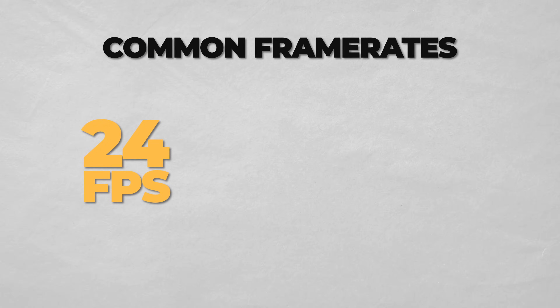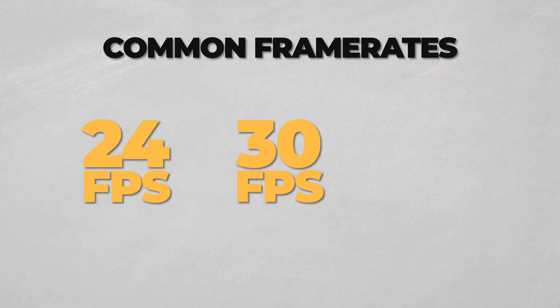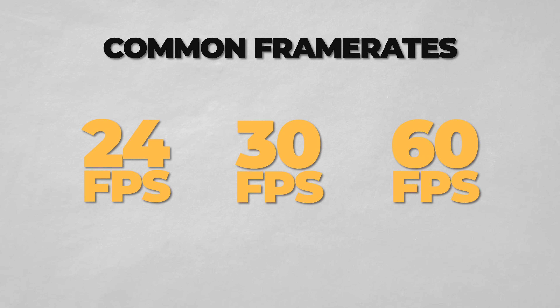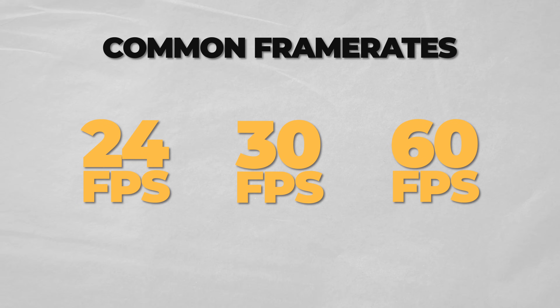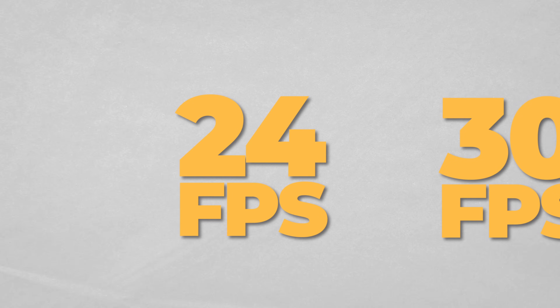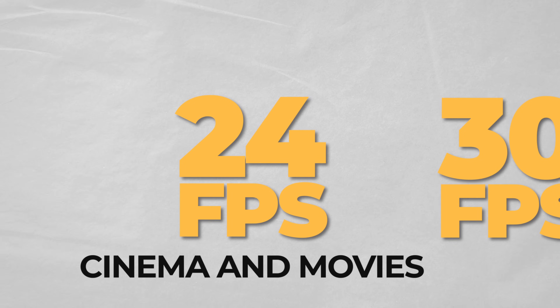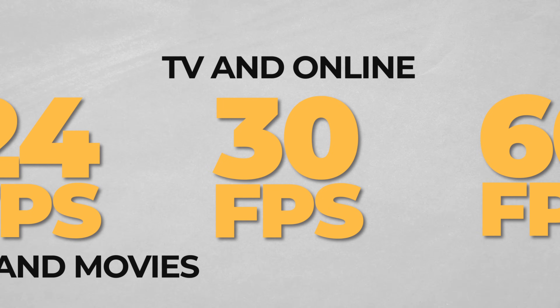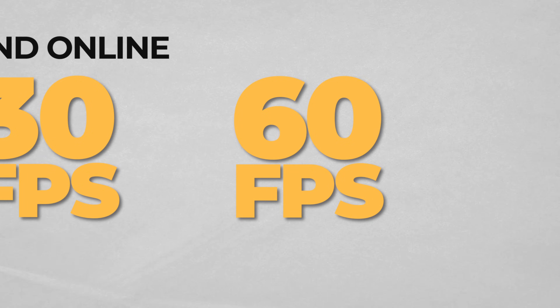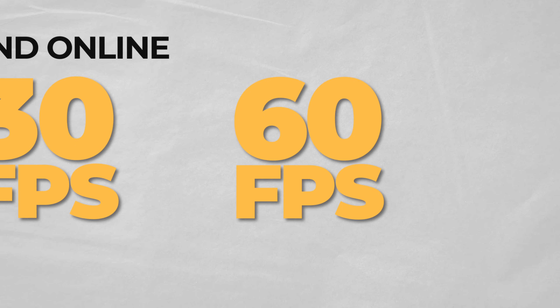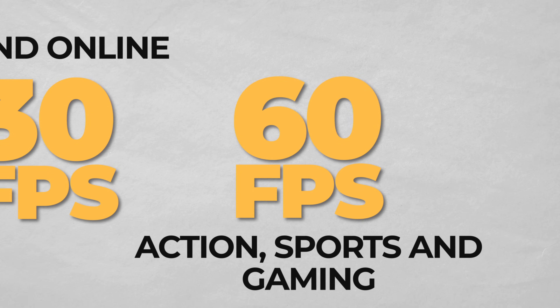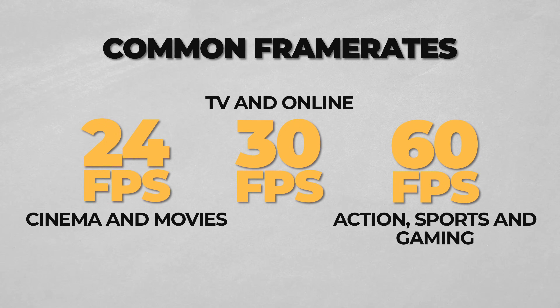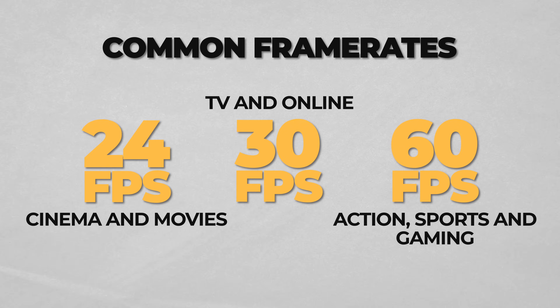Some of the most common frame rates are 24 frames per second, 30 frames per second, and 60 frames per second, although those are definitely not the only ones. 24 frames per second is known mostly as the frame rate used in cinema and movies. 30 frames per second is known for television and online productions. And 60 frames per second is known for action, sports, and gaming productions. Each of these frame rates have a distinct kind of look.